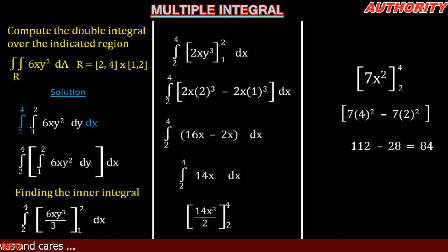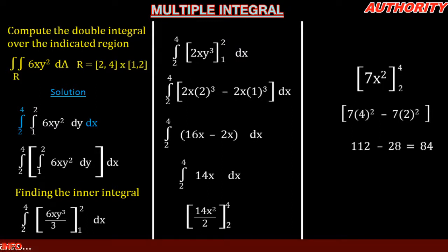So the double integral over the region [2,4] and [1,2] of 6xy² dy dx equals 84. You set up the inner and outer integrals and can take either one first — the result is the same. Let's take more examples to understand double and multiple integrals very well. Stay blessed.